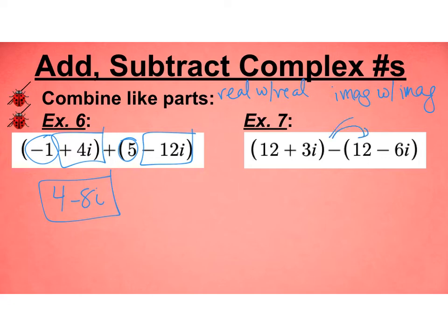Be careful with subtraction. Make sure you're distributing that all the way through. So 12 - 12 = 0. You can write 0, but you don't have to. 3i - (-6i) = 9i. So technically, this is written in complex form, and this would be an imaginary. I will accept either.